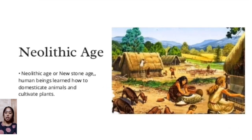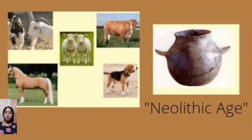Next is the Neolithic Age, or the New Stone Age. In the Neolithic Age, human beings learned how to domesticate animals and cultivate plants. The discovery of agriculture took place about 11,000 years ago. Human beings observed that plants grew where seeds fell on the ground — this is how agriculture started.